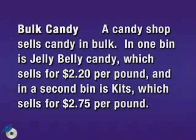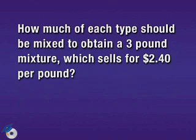A candy shop sells candy in bulk. In one bin is Jelly Belly candy, which sells for $2.20 per pound, and in a second bin is Kits, which sells for $2.75 per pound. How much of each type should be mixed to obtain a three-pound mixture which sells for $2.40 per pound?